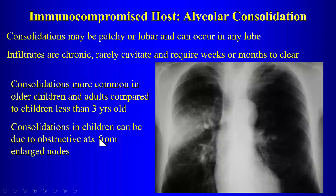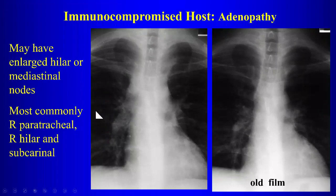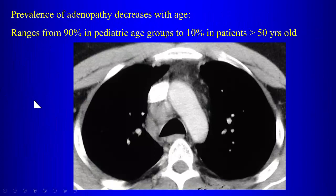In children with TB, consolidations can be secondary to obstructive atelectasis from enlarged lymph nodes compressing smaller airways. Here, one month later the consolidation has not changed much. TB belongs in your differential for chronic airspace disease and chronic consolidations. Lymphadenopathy can show enlarged hilar or mediastinal nodes; the most common are right peritracheal and right hilar.